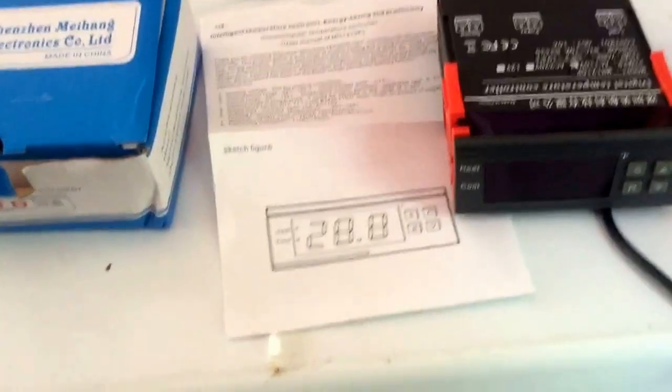But it still was dropping the temperature down to like 22 degrees, so it was freezing the beer. Makes sense - it's a freezer, supposed to freeze. So I did some googling and realized that what I need to do is basically replace the controller with something like this.